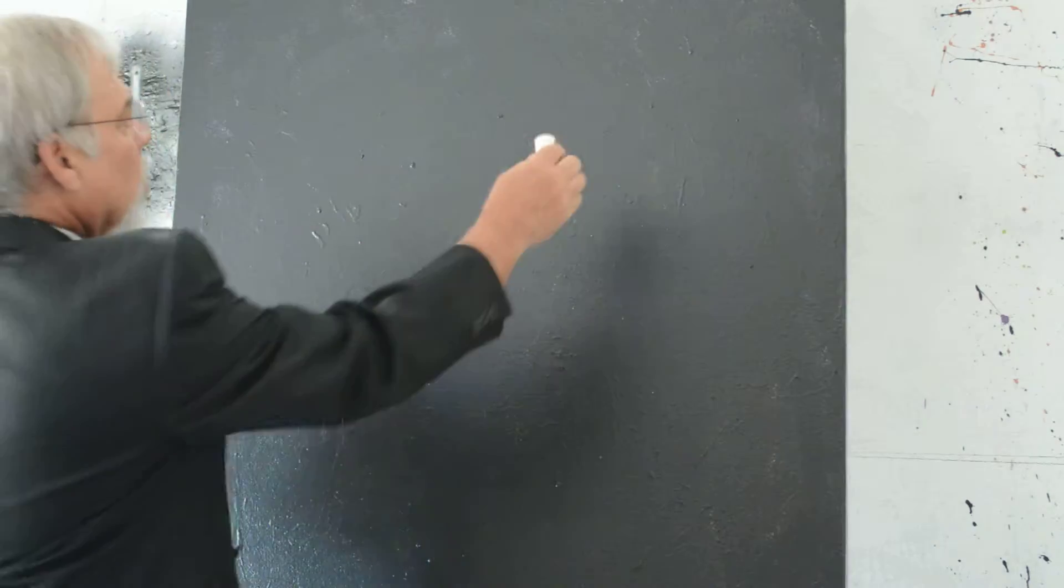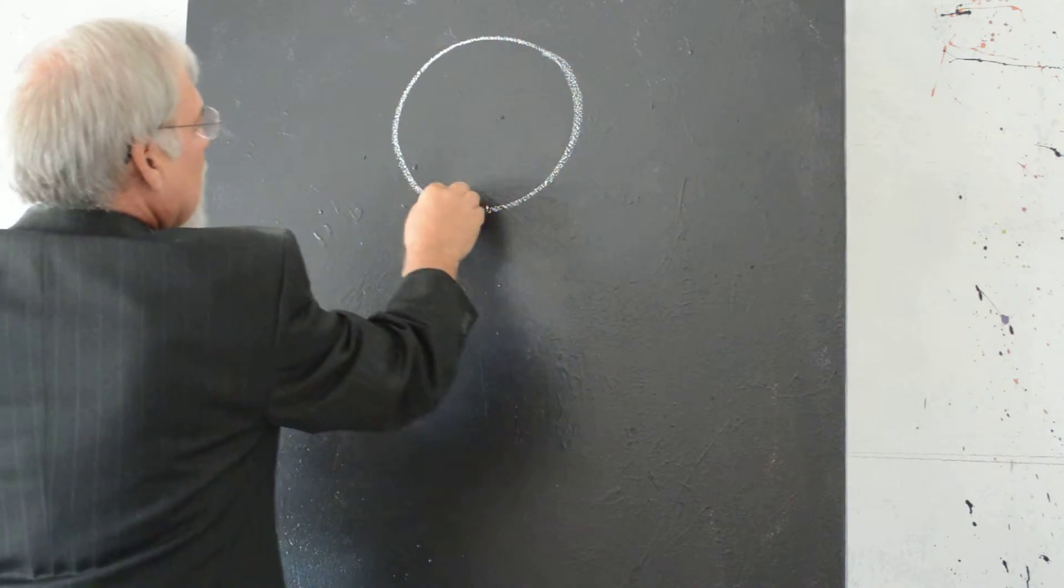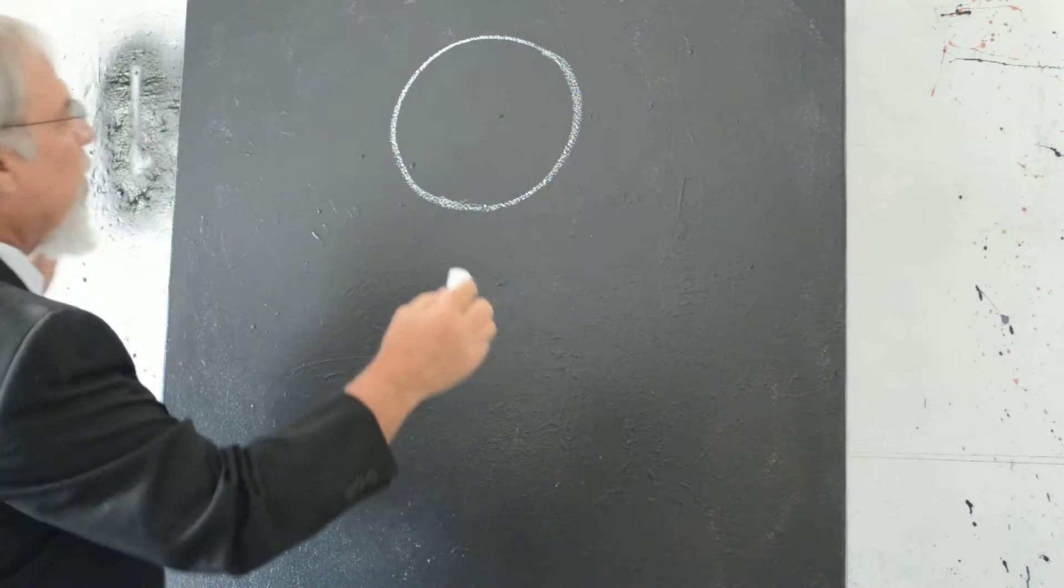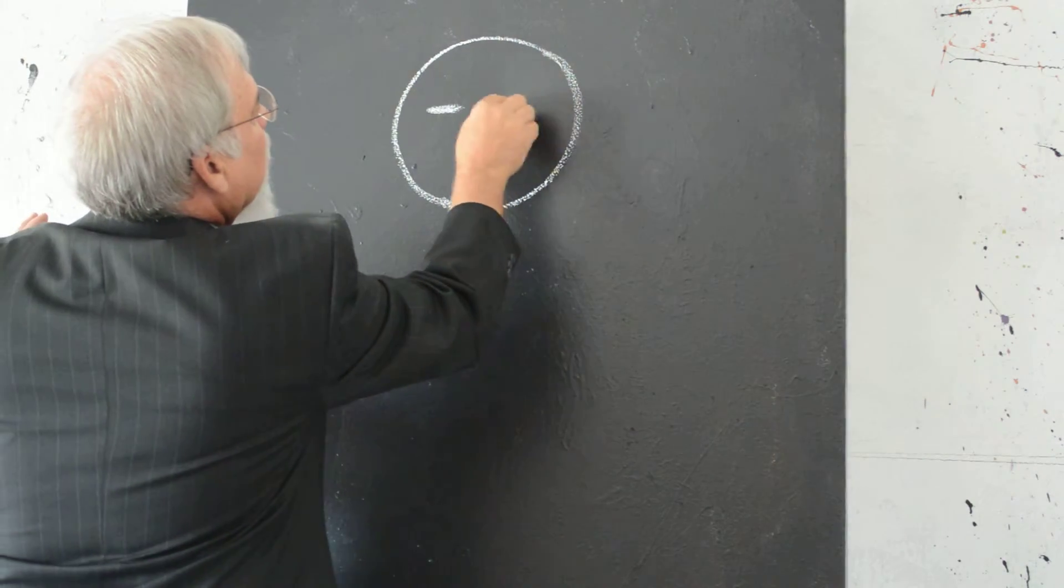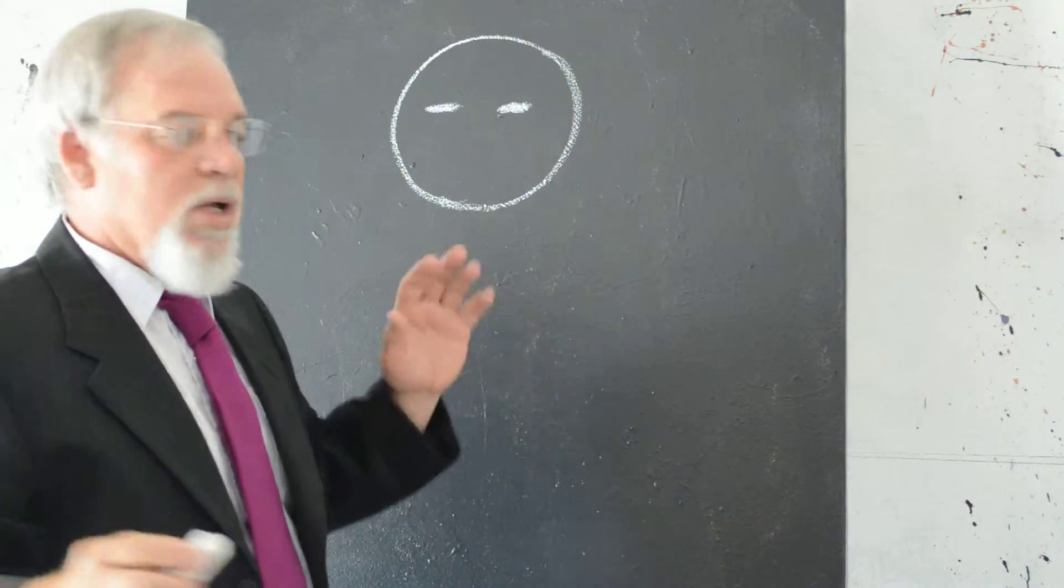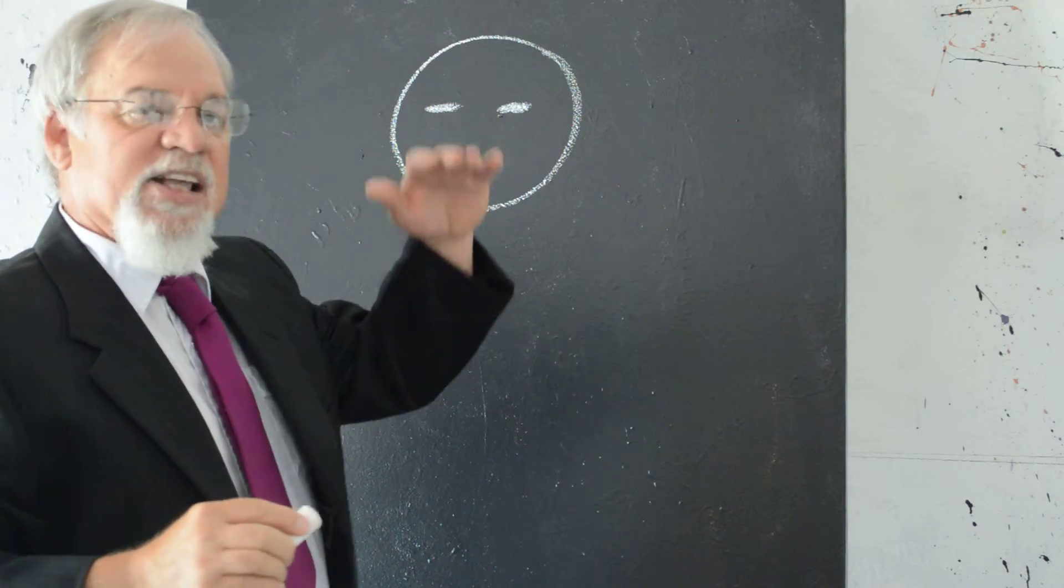First of all, we're going to start with the general shape of the head, which is a circle. And now we're going to place the eyes. Very important. The eyes are the windows of the soul. So it's very important to get the eyes in the right spot.